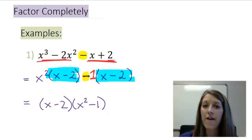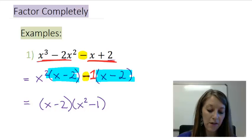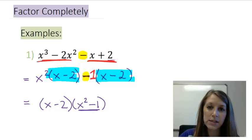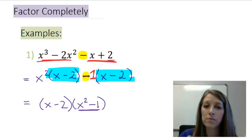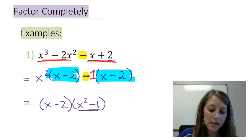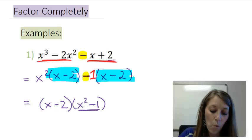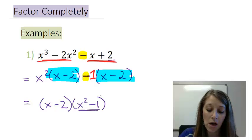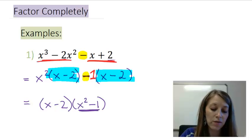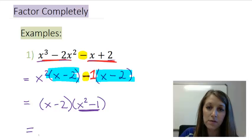So I have finished factoring it by grouping. But I'm not done yet. If I look in my second set of parentheses I notice both of those terms are actually squares. X squared is of course a square and 1 is actually a square itself. So I can factor this one farther by using my difference of squares method.